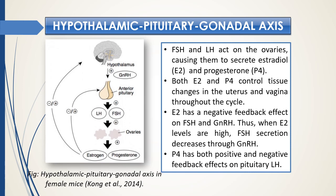These steroids control uterine development and the development and changes in the entire reproductive tract and secondary sexual characters of females. The hypothalamic-pituitary-gonadal axis — right from the hypothalamus to the gonads — governs all these processes. Many hormones including GnRH, LH, FSH, and the ovarian hormones estrogen and progesterone have a very intricate relationship.